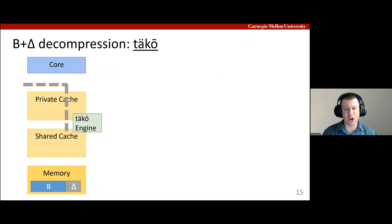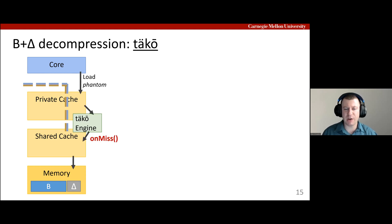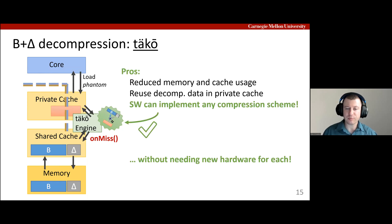Now let's look at TACO. Here, the application loads phantom data corresponding to the decompressed data it wants to access. When a load to phantom data misses in the private cache, TACO invokes an on-miss callback in software to decompress the data and store it in the private cache. Unlike hardware compressed caches, the application tells TACO exactly which data can tolerate loss of compression and other data is not affected. And since the callbacks are implemented in software, any compression scheme can be implemented without requiring new hardware for each one.